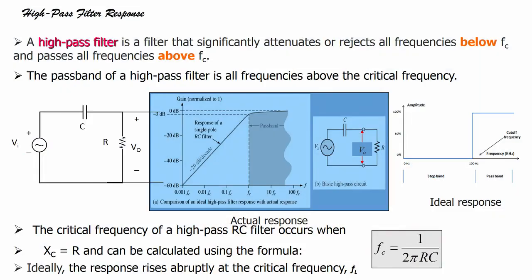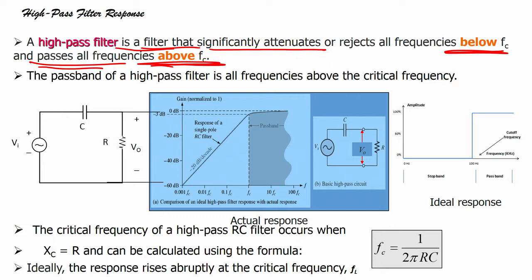A high pass filter is a filter that significantly attenuates or rejects all the frequencies below FC and passes all frequencies above FC. A filter that rejects all frequencies below FC while passing those above FC. FC is our critical frequency, which we have seen in the last lecture.